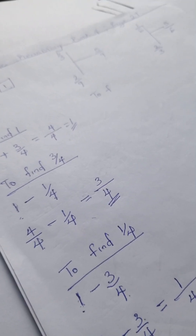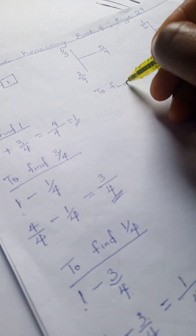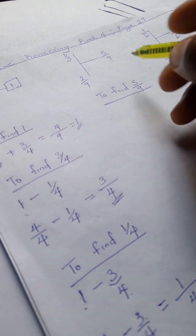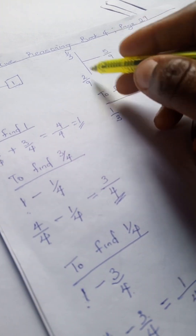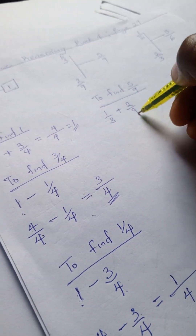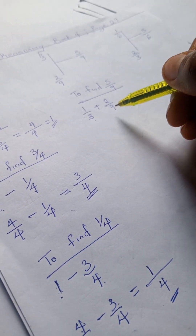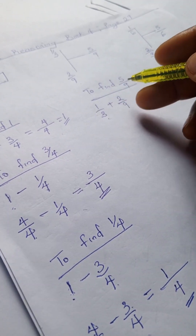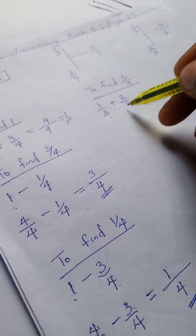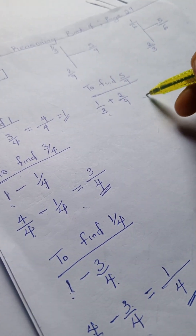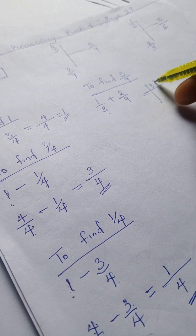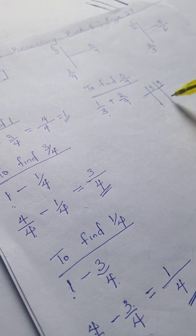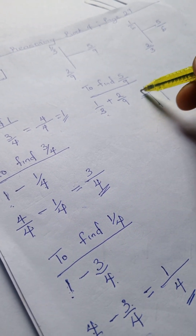To find 5/9, we're going to have 1/3 plus 2/9. When solving fractions with different denominators, you need to find the LCD — the Lowest Common Divisor. For this, we calculate the LCM using the prime factor method.